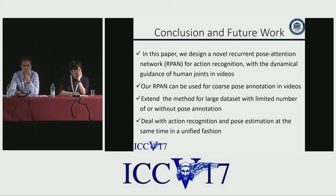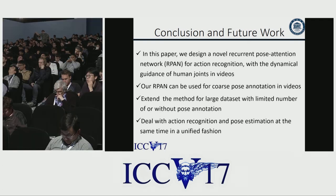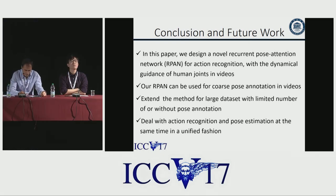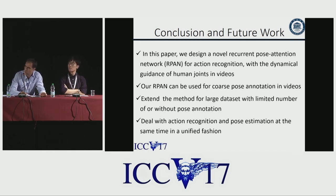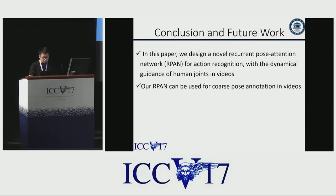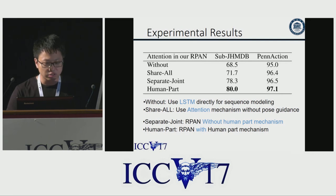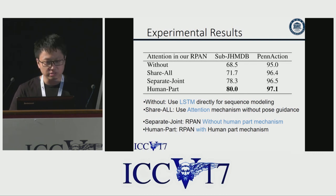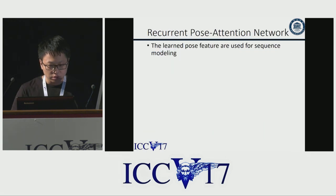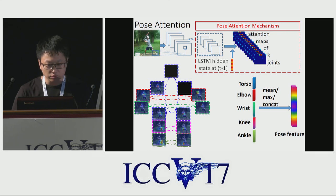Are there any questions from the audience? I have a question: you group some of the joint heat maps together — how do you decide that grouping and how important is it to your results? We did an experiment with and without the human part setting. The human parts are designed based on their semantic relationship; for example, we designed the human parts as torso, elbow, wrist, knees, and ankle.